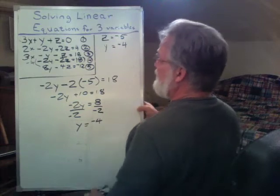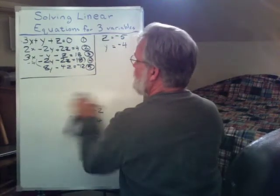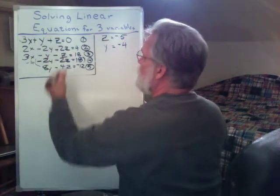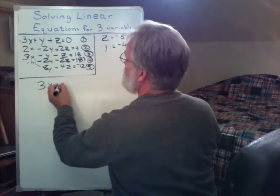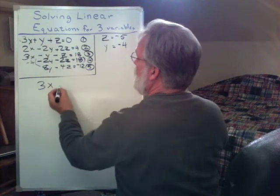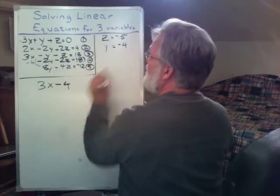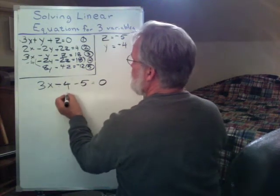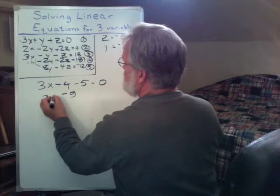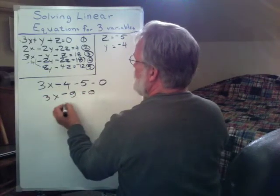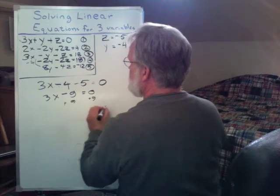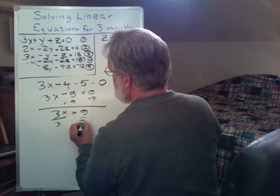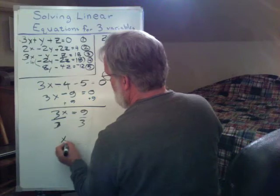All right? Ah! Now I have a y and I have a z. I can plug it into one of these, 1, 2, or 3, and come up with an answer. Let's just go with number 1. So I have 3x. y is minus 4, so that's a minus 4. z is a minus 5, so it's a minus 5. And that all equals 0. Minus 4 plus minus 5 is a minus 9. Migrate that over. 3x equals 9. Divide both sides by 3. x equals 3.